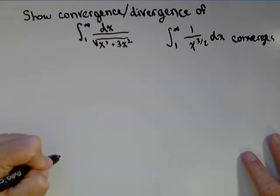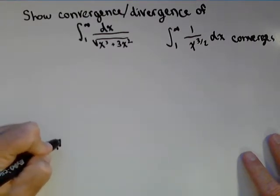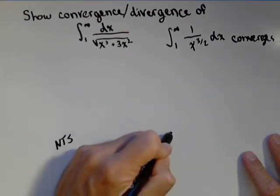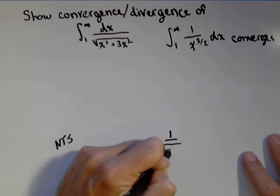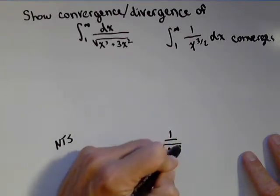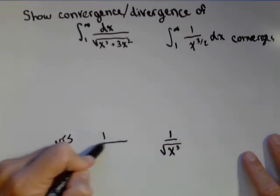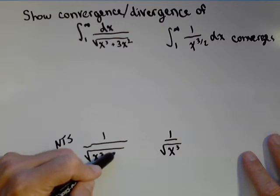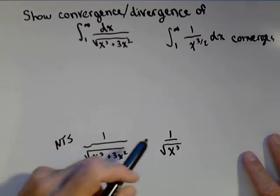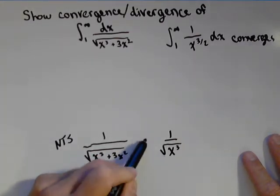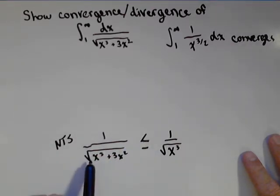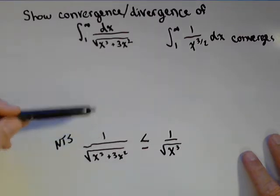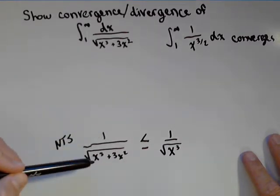So, what we're gonna do is we're gonna compare these two. One way to handle these is to start with what you need to show. So, we need to show, well, we are gonna be comparing one over the square root of x cubed with one over the square root of x cubed plus three x squared. And now, because we're trying to show convergence, we need to show that the one we're testing is less than or equal to. So, this is our goal. So, what I'm gonna do is I'm gonna work backwards, which is why I left this space.